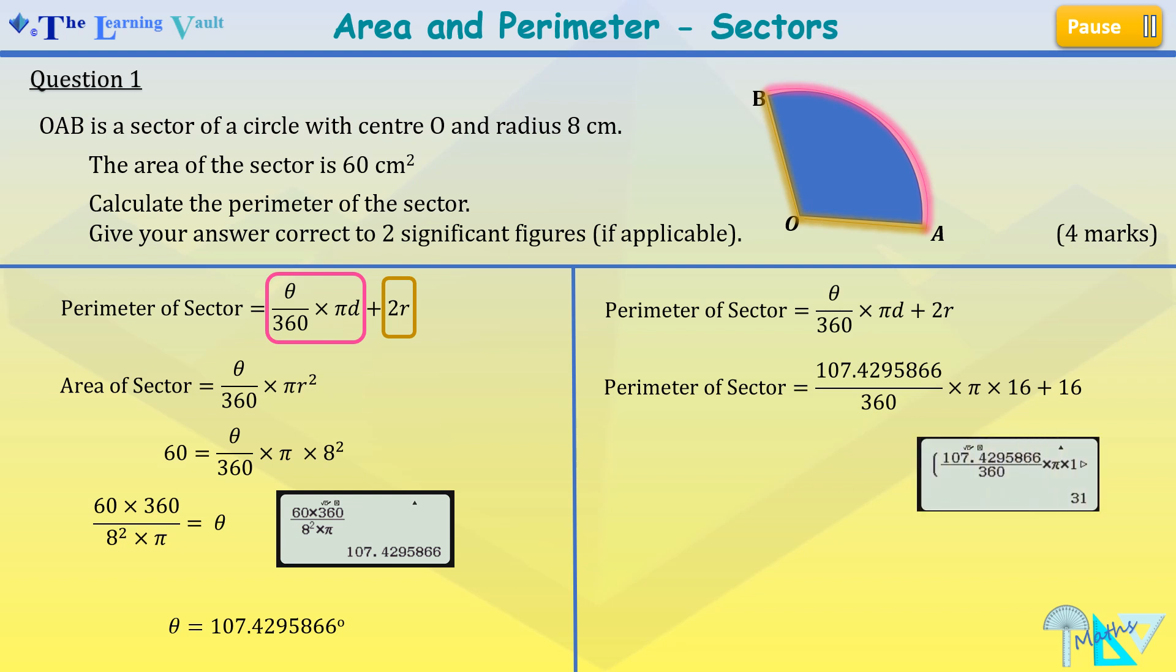We type this information into our calculator and we'll find that the perimeter of the sector is 31 centimeters. That's our answer and with this we'll gain our full 4 marks for that question.